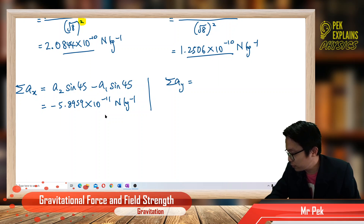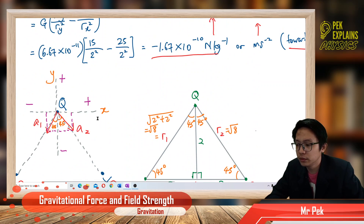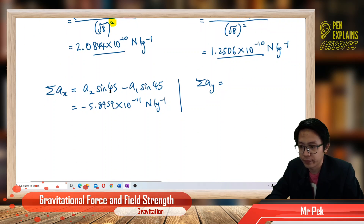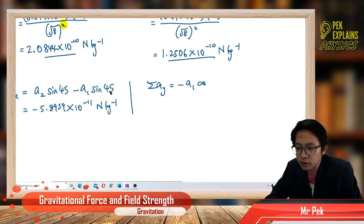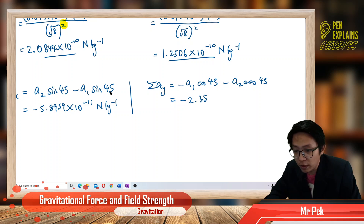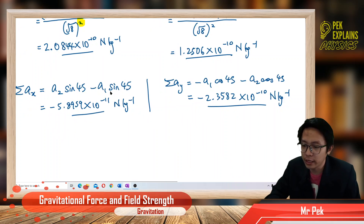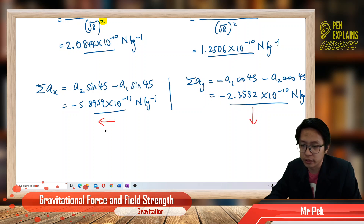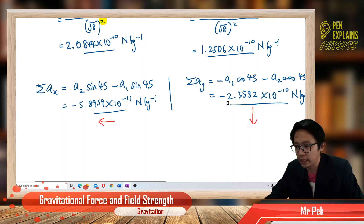For total AY, the vertical component, we have negative A1 cos 45 and negative A2 cos 45. Substituting, we get negative 2.3582×10⁻¹⁰ newton per kilogram. So the X component is going to the left and the Y component is going downward — both are negative.